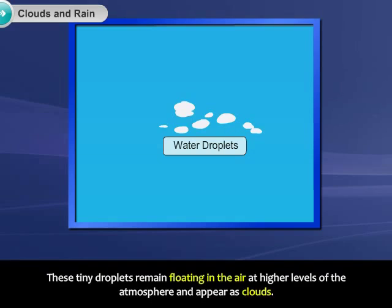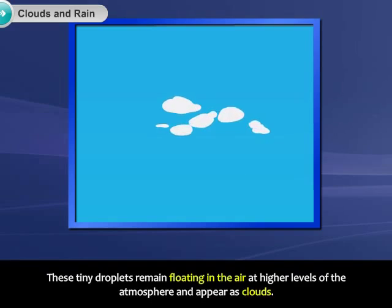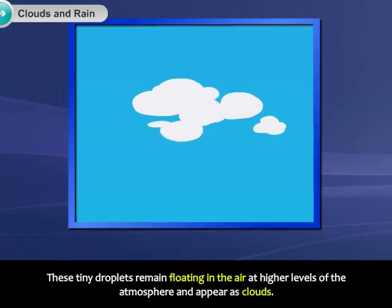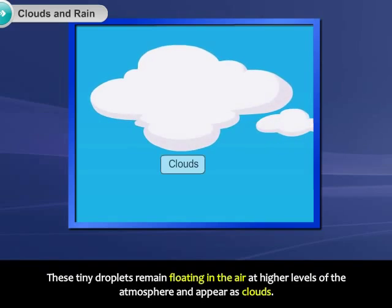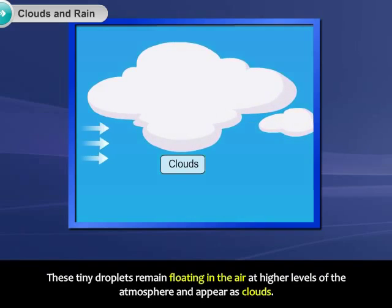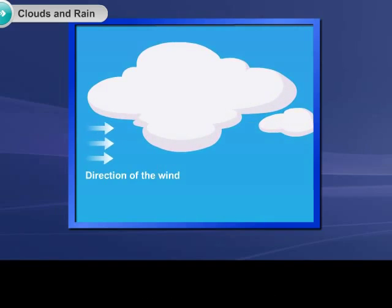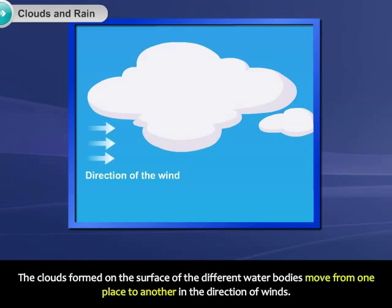These tiny droplets remain floating in the air at higher levels of the atmosphere and appear as clouds. The clouds formed on the surface of the different water bodies move from one place to another in the direction of winds.